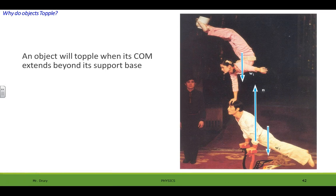An object will topple when its center of mass extends beyond its support base. This is very similar to the plane I just showed you. So here you have a couple people doing some type of acrobatic stunt, but we know the center of mass has to be over her hands. If not they would topple.